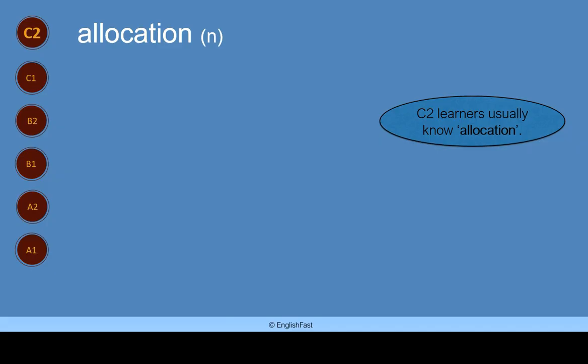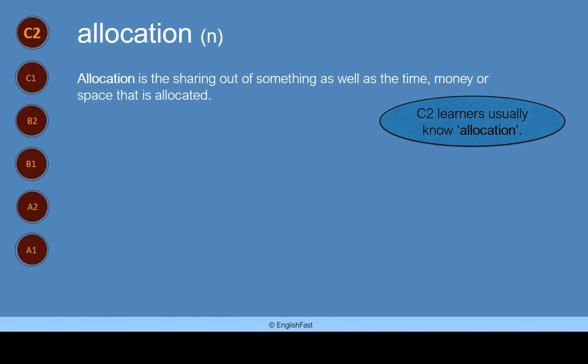Allocation. Allocation is a noun. C2 learners usually know allocation. Allocation is the sharing out of something, as well as the time, money or space that is allocated.